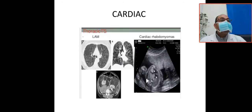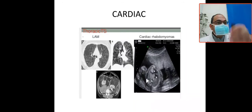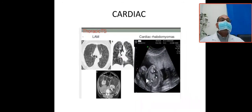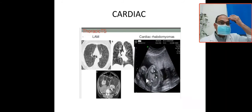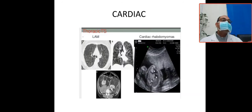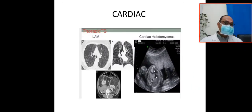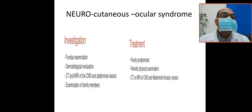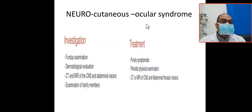To summarize, phakomatosis means neuro-oculo-cutaneous syndrome. There are CNS tubercles, and the patient can present with intractable seizures or hypsarrhythmia. Ocular involvement includes retinal astrocytomas. Cardiac involvement includes rhabdomyomas, and renal or liver involvement leads to angiomyolipomas — collectively called visceral tumors in tuberous sclerosis.